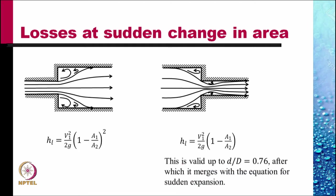Losses at a sudden change in area. At a sudden expansion, the head loss is given by V1 squared by 2g into 1 plus A1 by A2 whole squared. This had been obtained in an earlier lecture.